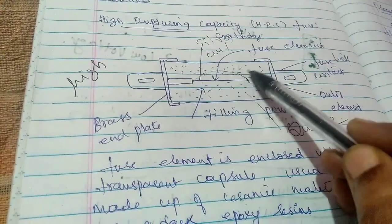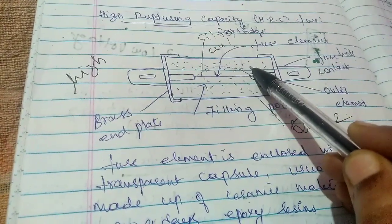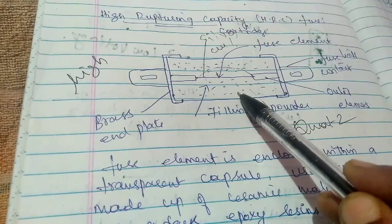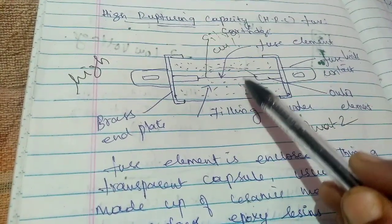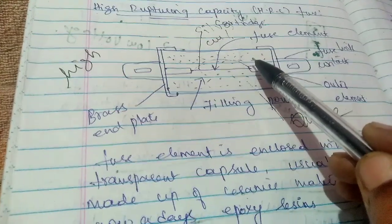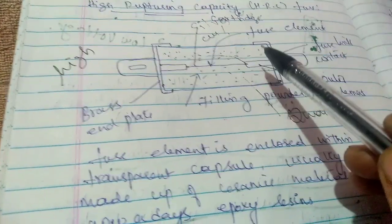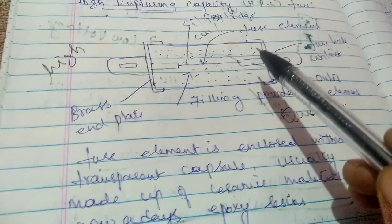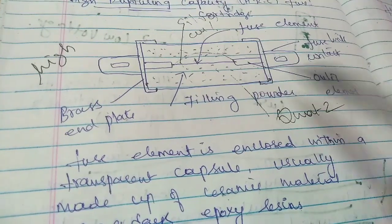That vapor will combine with this filling powder. The filling powder used here is quartz. This will produce a high resistance and this high resistance gradually will be converted into an insulator and current will get cut off. We will see in the next class.